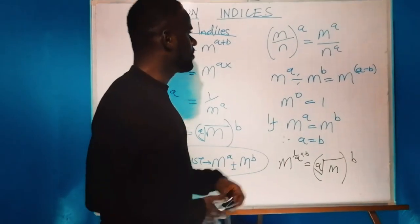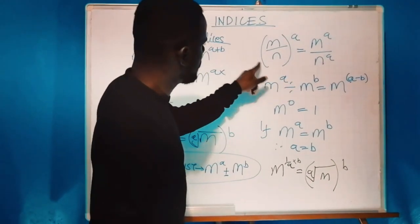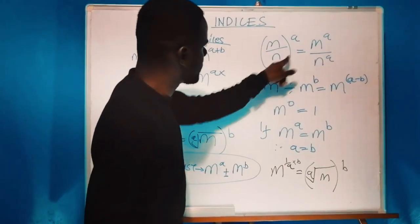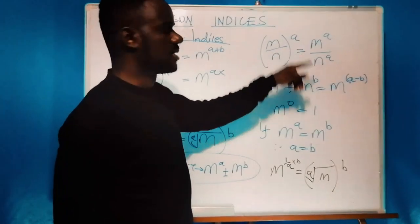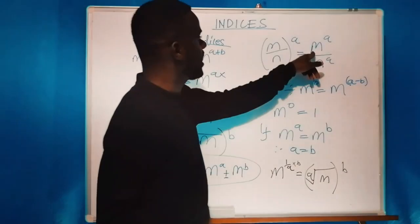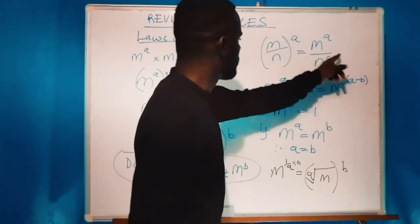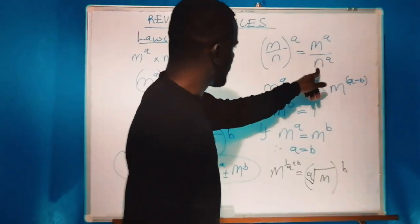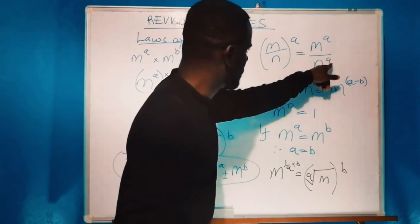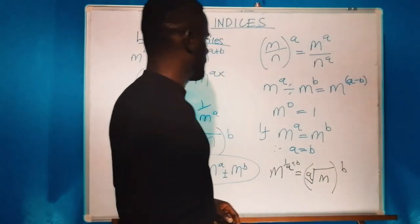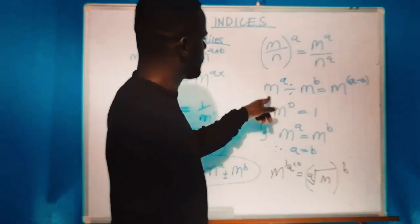The fifth law: one over m, all over n, the whole thing in brackets raised to power a, is the same as m raised to power a all over n raised to the same power a.